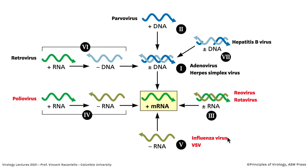Today we're going to talk about three different kinds of RNA-containing viruses: Class 3, which have double-stranded RNA; Class 5, with negative-strand RNA; and Class 4, with plus-strand RNA. Class 6 — plus RNA with a DNA intermediate — we're going to reserve for another lecture, because that gets its own lecture.